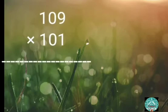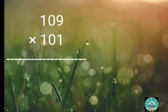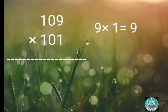Multiply 109 by 101. Multiply one's digits: 9 times 1 equals 9. Write 9 as 09.